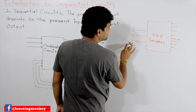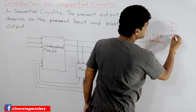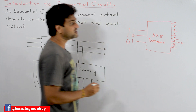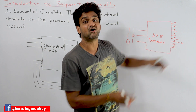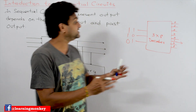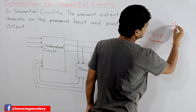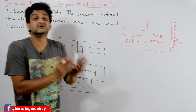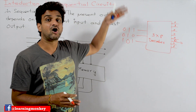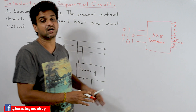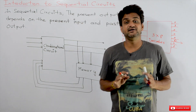If the input changes, say to 0-0-1, then that output line gets activated, generating an output of 1 while all remaining outputs become 0. You can take any combinational circuit — the present output is totally dependent upon the present input. That is how combinational circuits work, and now we move to understanding sequential circuits.